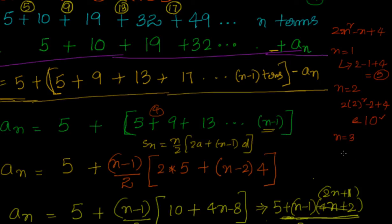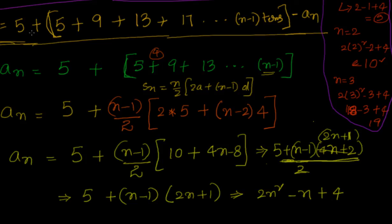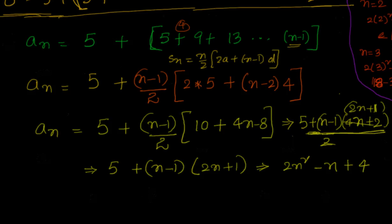Final check for n = 3: 2×9 - 3 + 4 = 18 - 3 + 4 = 19. We are good to go with the aₙ we got. You can cross-check before you proceed because there is always a chance of making a mistake — after all, we are human beings and tend to make small mistakes.